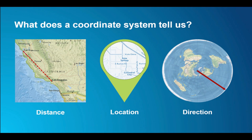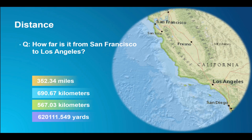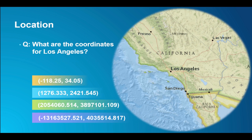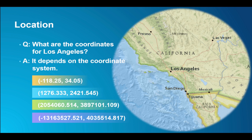What exactly is a coordinate system? It's an agreed-upon way of describing data, such as distance, location, or direction. For instance, how far is it from San Francisco to Los Angeles? We could say it's so many miles, so many kilometers — which one is correct? It all depends on what your coordinate system is. Similarly, for a coordinate for an area like Los Angeles, we have small numbers like 118, 34, and then we have very large numbers. Again, which is correct depends on your coordinate system.